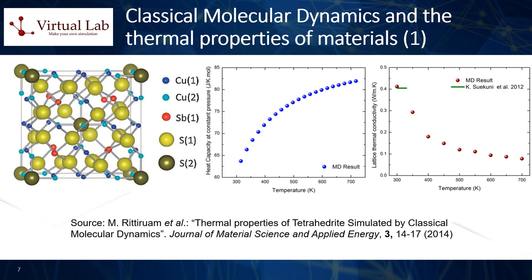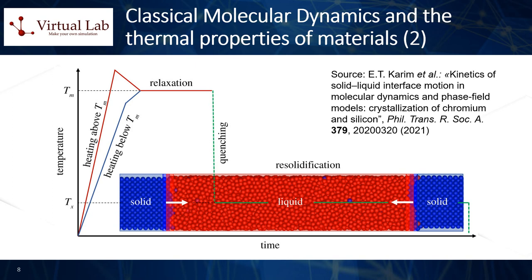2. Thermal conductivity. The thermal conductivity of a material can be calculated using the Green-Kubo relations, which link the thermal conductivity to the time integral of the heat current autocorrelation function. Alternatively, the thermal conductivity can be computed via a non-equilibrium method, where a temperature gradient is applied to the system and the resulting heat flux is measured. 3. Thermal expansion. Thermal expansion coefficients can be computed from MD simulations by calculating the linear response of the system's size to changes in temperature. This involves running simulations at different temperatures and measuring the change in the size of the system. 4. Melting point. The melting point of a material can be determined from MD simulations by gradually increasing the temperature and monitoring the phase of the system. The temperature at which the system transitions from a solid to a liquid state is identified as the melting point.